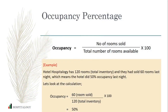The very first one is occupancy percentage. We calculate occupancy percentage to understand how many rooms were occupied on a particular day. The formula is: number of rooms sold divided by total number of rooms available (total inventory), times 100. For example, Hotel Hospitality is a 120-room hotel and the hotel had 60 rooms occupied on a particular day. So the formula gives us: 60 divided by 120, times 100, which equals 0.5, or 50%.